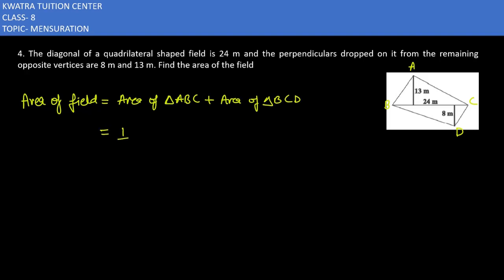Area of triangle ABC is half base into height. The base in ABC is 24 and height is 13. Then area of triangle BCD is half into base — base is 24 — into height, which is 8. The 2 and 24 can be cancelled to give 12.